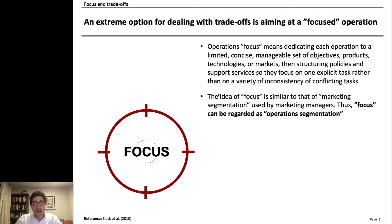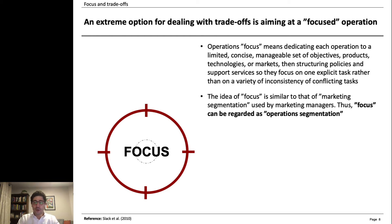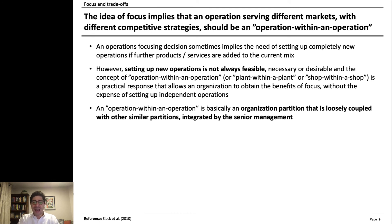We also talk about focus and trade-off. That's an extreme option for dealing with trade-offs — it's just focusing the operations. It's like segmenting the operations and having them focused on doing one thing: one set of products, one set of manageable objectives, technologies, and markets. This idea implies having different markets and having an operation within an operation.